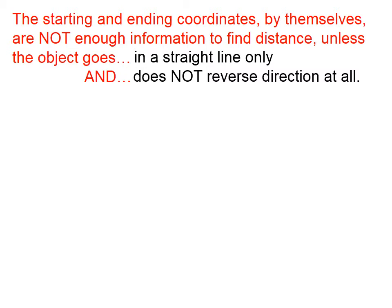If the object travels in a straight line but goes in the opposite direction for a while, say to the left, and then goes back to the right, it's still traveling along a line, but the distance and the displacement magnitudes will not agree.